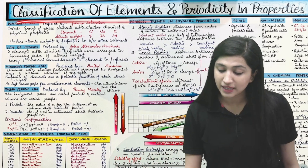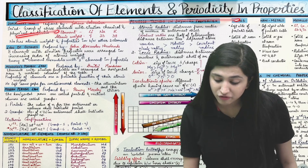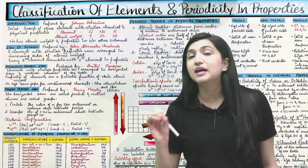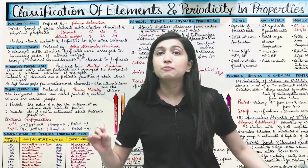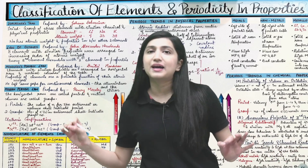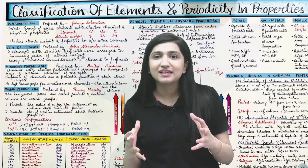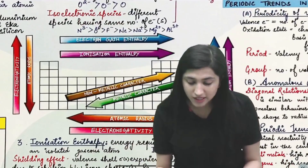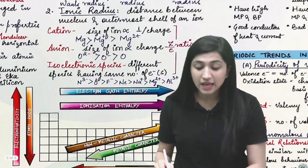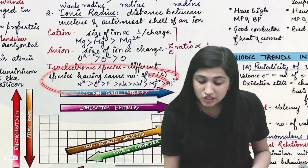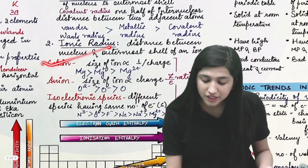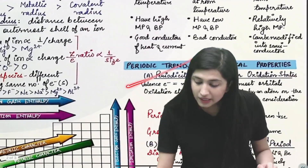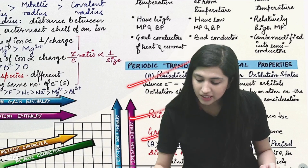Ek dam detailed manner mein — each and every point from the unit has been covered. Jitne bhi relevant concepts aap padhte hain, sabko detailed manner mein compile kiya gaya hai is single sheet of paper mein. Aap dekhiye saari ki saari periodic properties, unka trend, and in fact jitne examples bhi humne discuss kiye the with respect to all the properties — unko bhi yahan mention kiya gaya hai.